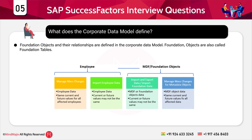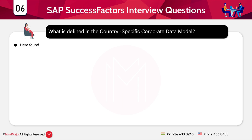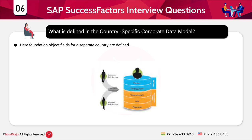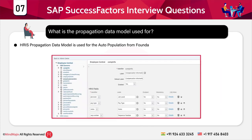Foundation objects are also called foundation tables, and they include organization, job, and pay. The next question is: what is defined in the country-specific Corporate Data Model? The foundation object fields for a separate country are defined there. The next question is: what is the Propagation Data Model used for? The HRIS Propagation Data Model is used for auto-population from foundation tables.